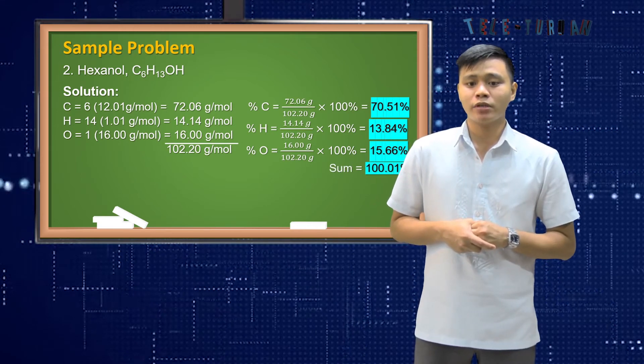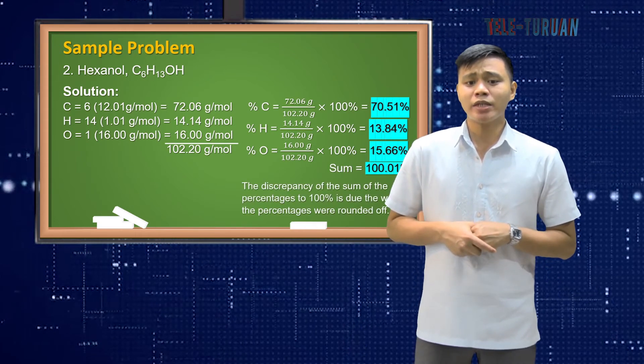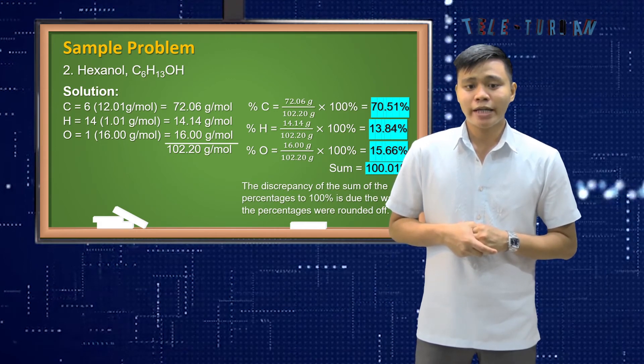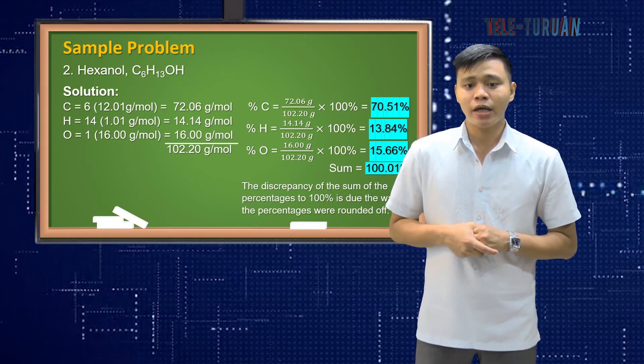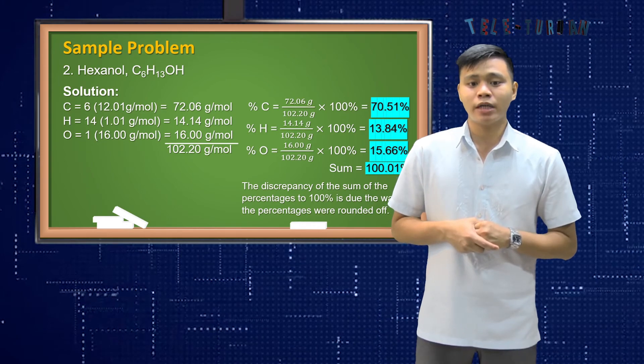The sum is 100.01%. The discrepancy of the sum of the percentages to 100% is due to the way the percentages were rounded off.